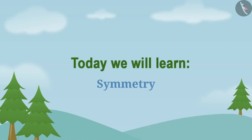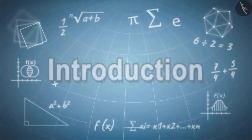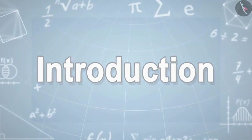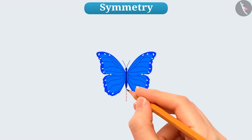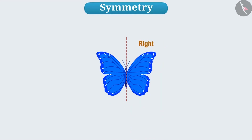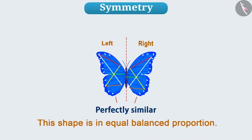Today we will learn about Symmetry. Look at this picture of a butterfly. Can you tell what is special about this? Give it a thought. We can divide this picture into two parts in such a way that the right half and the left half are completely similar. This is because this shape is in equal balance, that is, in equal proportion. By proportion and balance, its shape looks attractive to the eyes.